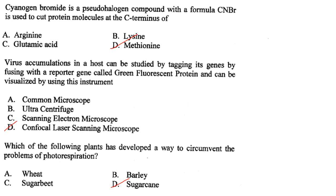Which of the following plants has developed a way to circumvent the problem of photorespiration? It is sugarcane. Answer is option D.